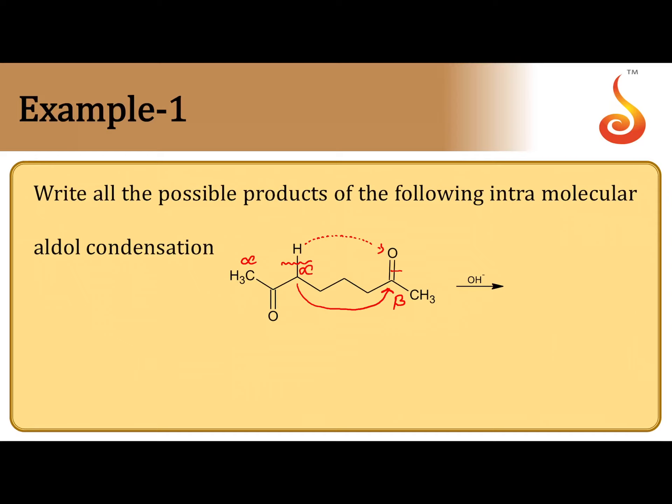So between alpha and beta how many atoms are there? One, two, three, four, five. So the product is a 5-membered ring. You write like this, 5-membered ring. So one is alpha carbon, next one is beta carbon. This is the new bond which I am showing with thick line, the new bond between alpha and beta.